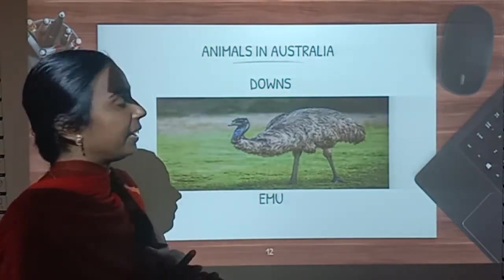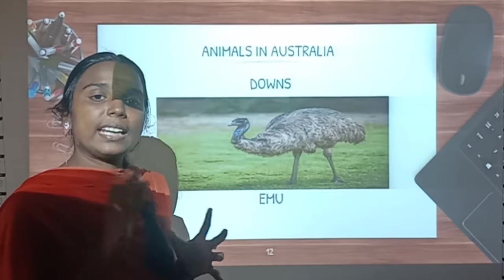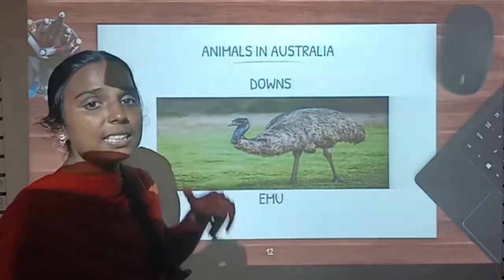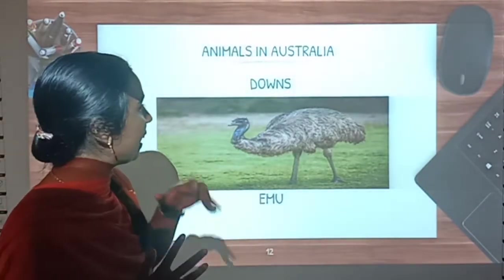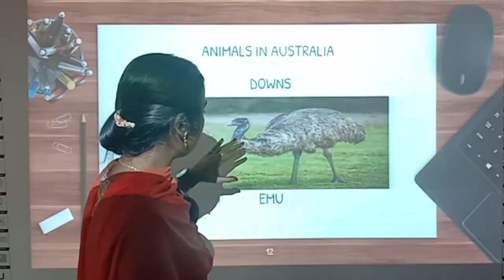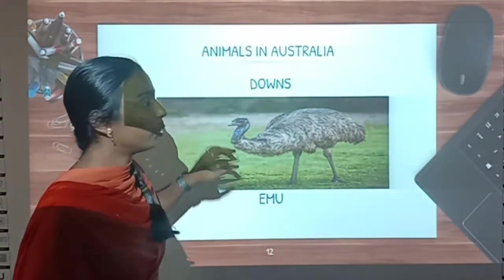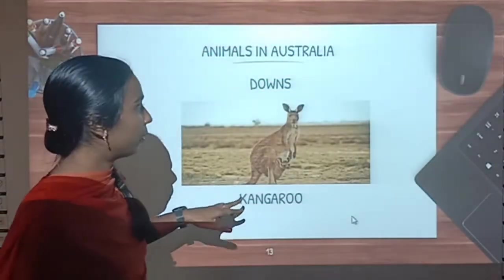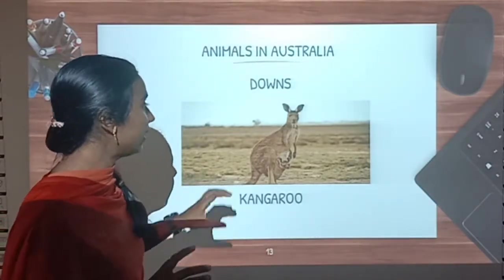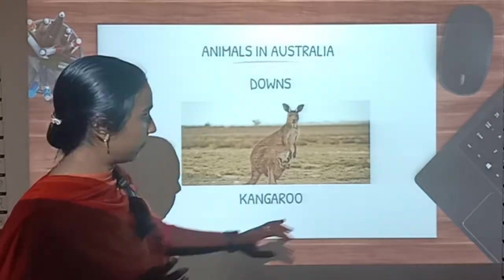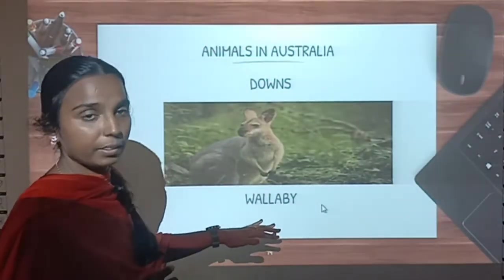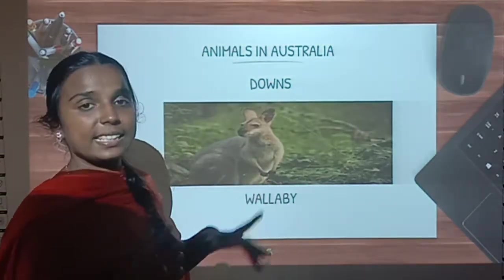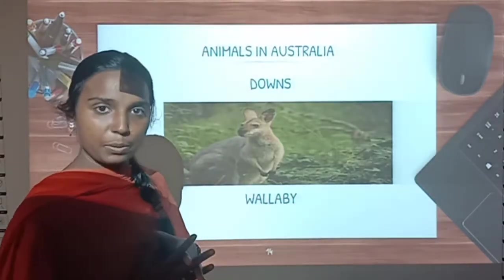Now let us see what animals we can find in Australia. The grasslands in Australia are known as downs. Let us see what animals we can find in the downs. First, see this bird — emu, seen in the downs. And then see this is kangaroo. Australia is famous for kangaroos. So this is kangaroo seen in the downs. And then see this is wallaby, wallaby seen in the downs. These are some important animals we can see in the grasslands of Australia, that is in the downs.